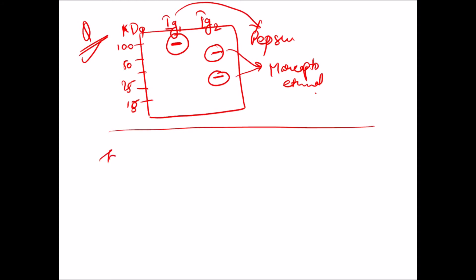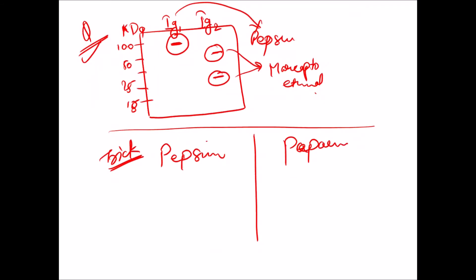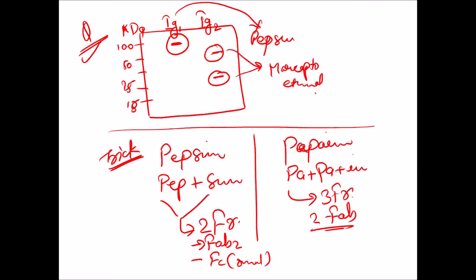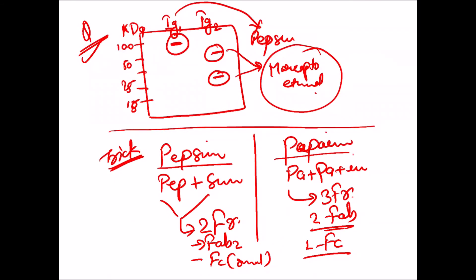A useful trick to avoid confusion between pepsin and papain: 'pepsin' is pep-plus-sin, so you get two fragments — one F(ab')2 and one small peptide Fc. 'Papain' is pa-pa-in, giving three fragments — two Fab fragments and one whole Fc fragment. Mercaptoethanol reduces disulfide bonds so the light chain and heavy chain dissociate.